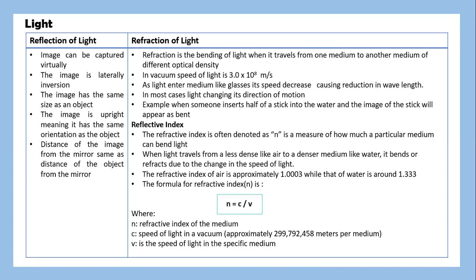Let's move on to light. Reflection of light. Reflection of light is an image that can be captured virtually. The image is laterally inverted. The image has the same size as an object. So if you put a mirror in front of you, the image is still upright, meaning it has the same orientation as an object. And the distance of the image from the mirror is the same as the distance of the object from the mirror.